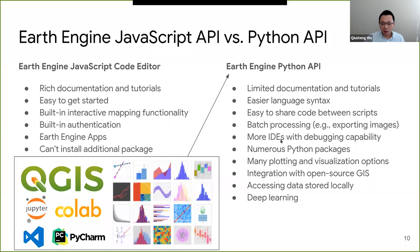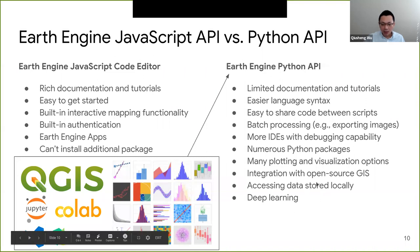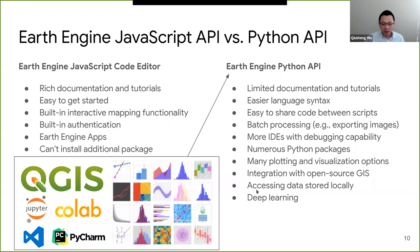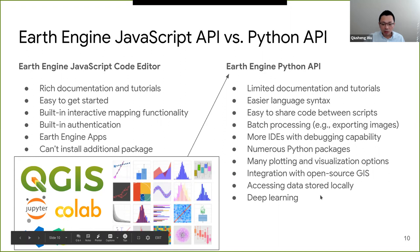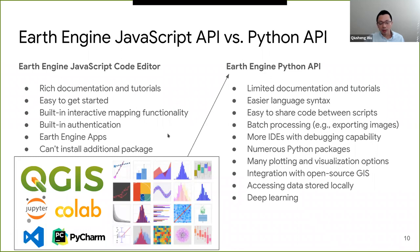But the advantage of Python is that you have a lot more choices. In terms of IDE, you can use Google Colab, you can use a Jupyter notebook, and you can also utilize the Python ecosystem — there are so many packages you can use. You can access local data, for example vector data or raster data, and integrate those with Earth Engine data. And lastly, deep learning — this is a very hot topic right now, and it's nicely integrated into the Earth Engine Python API. It's not very easy to do with the JavaScript API.